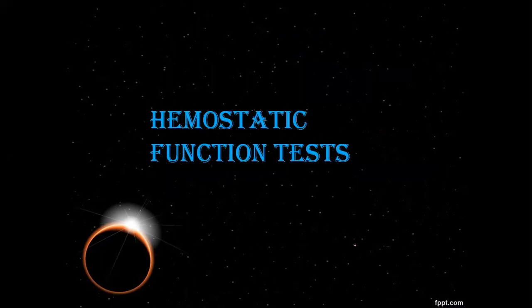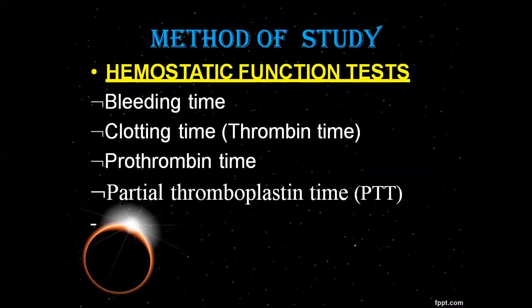For hemostatic function tests, which are the method of study, we have basically four types of tests. First, BT — bleeding time. Second, CT — clotting time. Third, thrombin time. Fourth, PT — prothrombin time, and PTT — partial thromboplastin time.